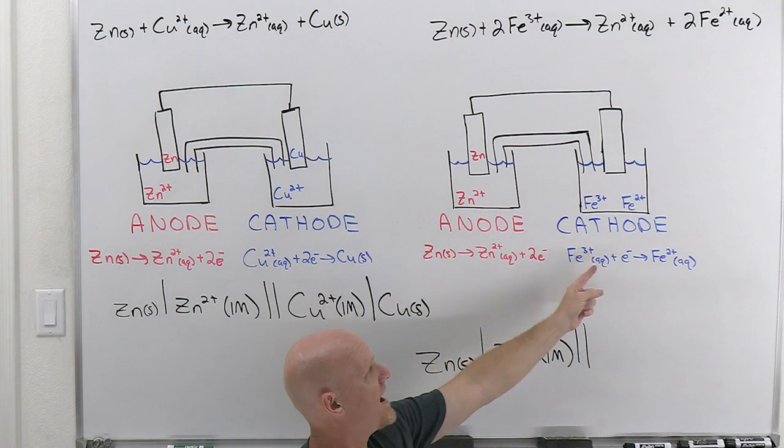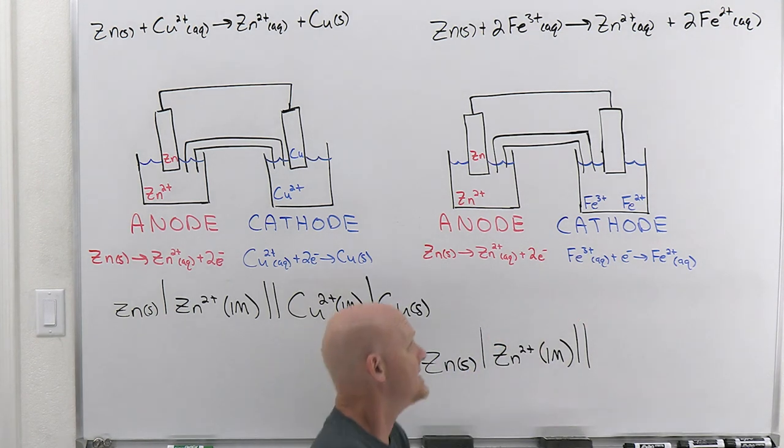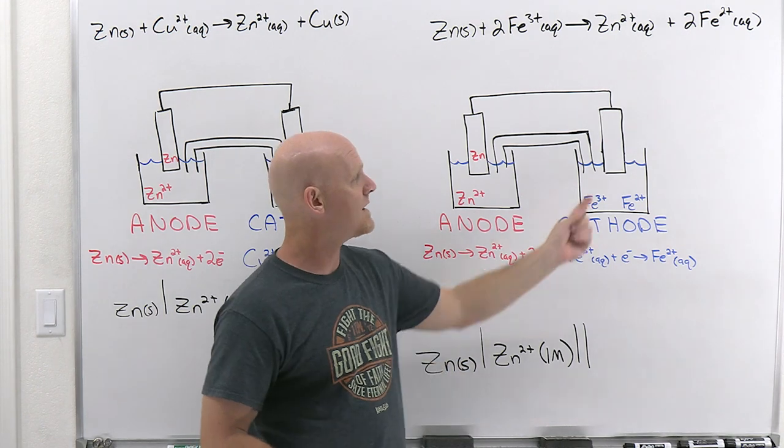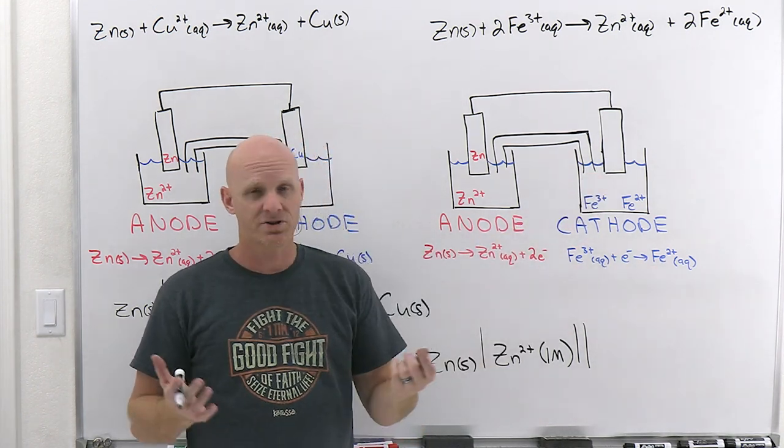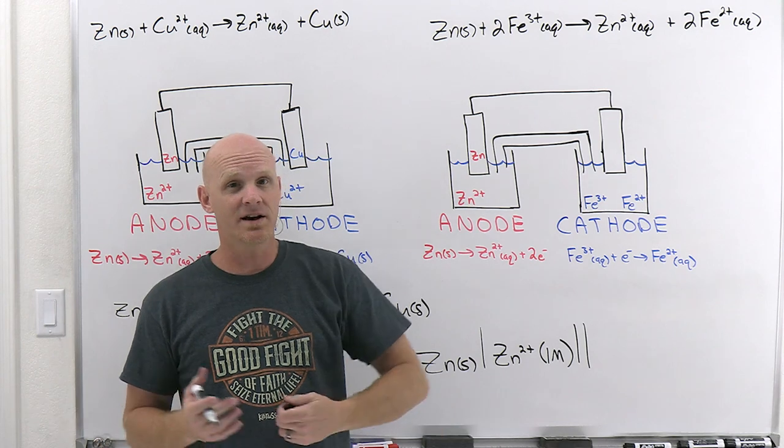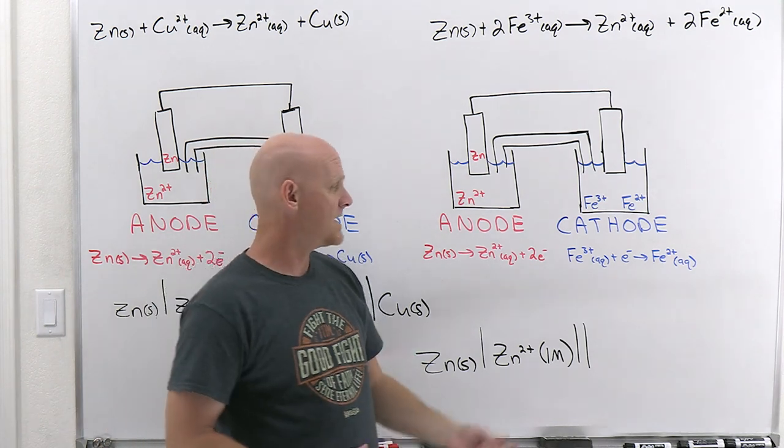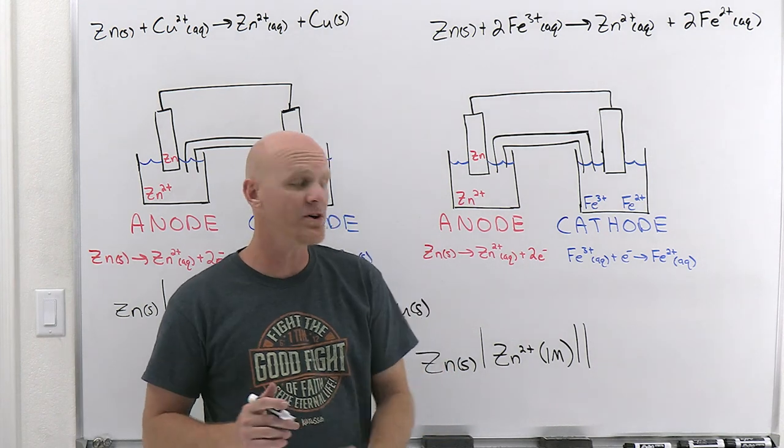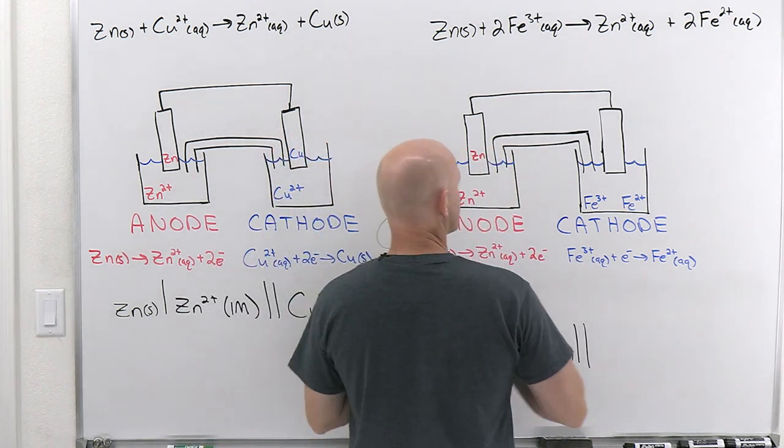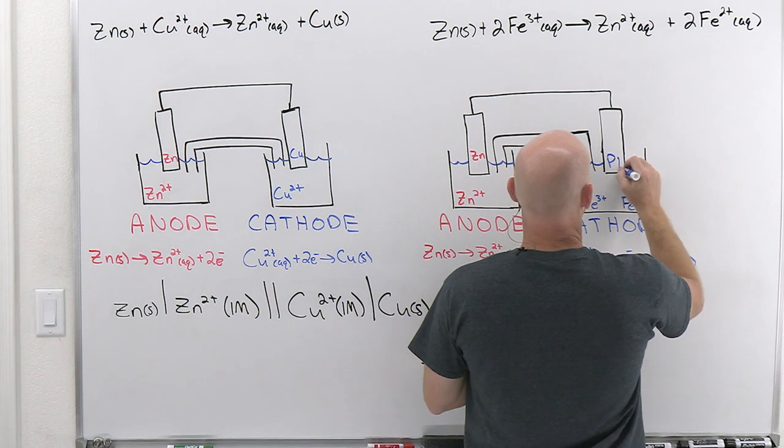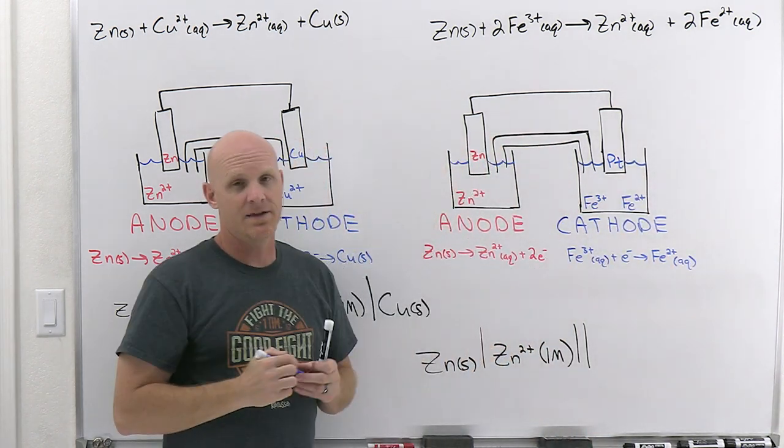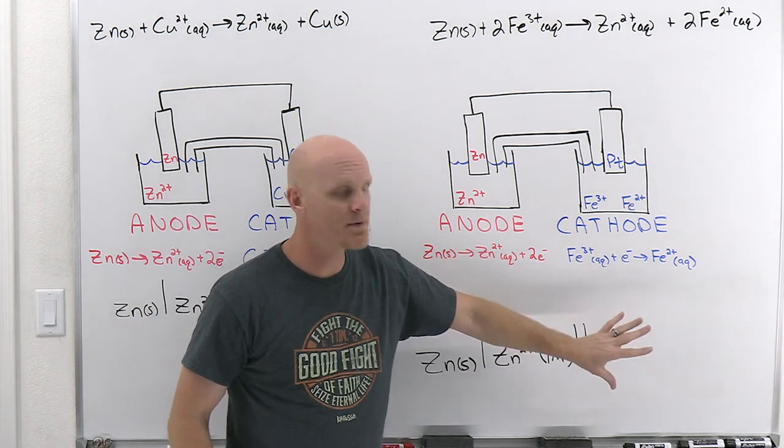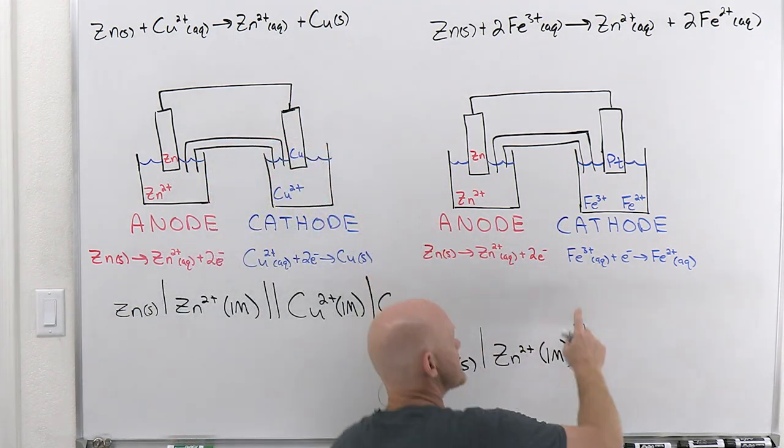But the question is, for the cathode, we have an issue. And the issue is that both reactant and the product, they're both aqueous, which means you can't make the electrode out of either one of them. So your electrode's got to be something electrically conductive, usually a solid metal, and if you don't have a solid metal as part of your half reaction, well then you have to use what's called an inert electrode. So a very common inert electrode here that we're going to use is platinum.